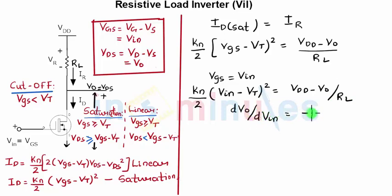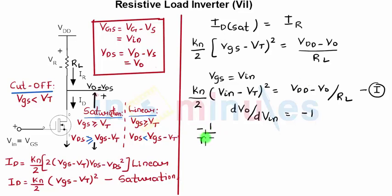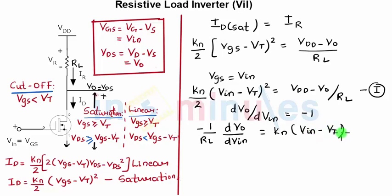Since we know that dVout/dVin = −1 at VIL on the voltage transfer characteristic, let's differentiate equation 1 with respect to VIN. Differentiating gives: KN · (VIN − VT) = −(1/RL) · dVout/dVin. Substituting dVout/dVin = −1, we get: 1/RL = KN · (VIN − VT).